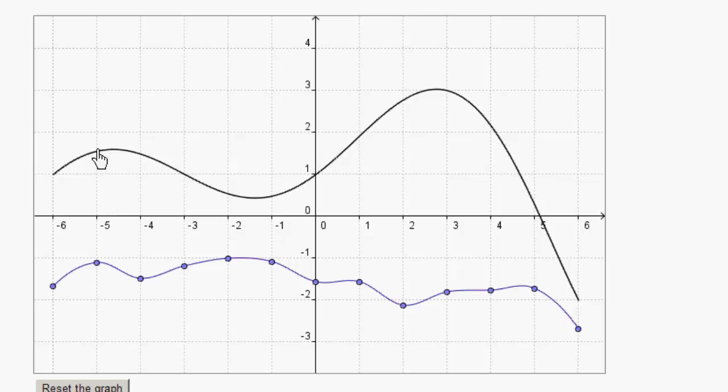that maybe has a slope of, it's close to zero, maybe like 0.1, so I guess we can make that pretty small, 0.1.